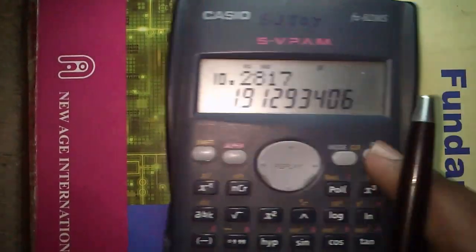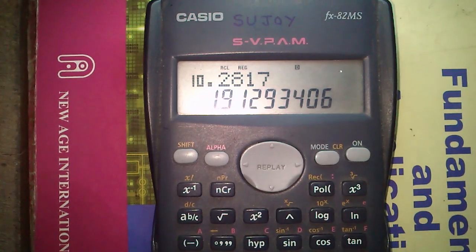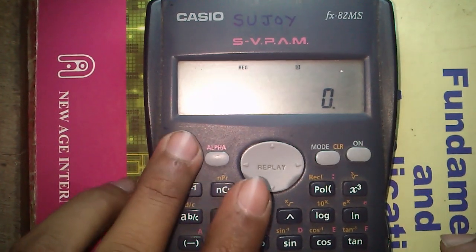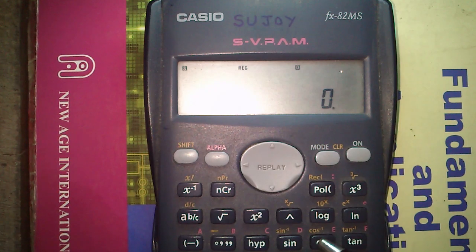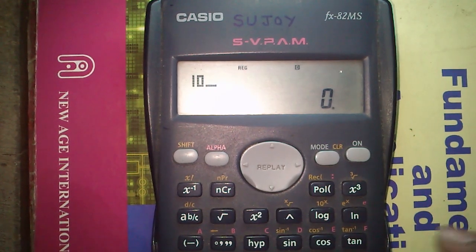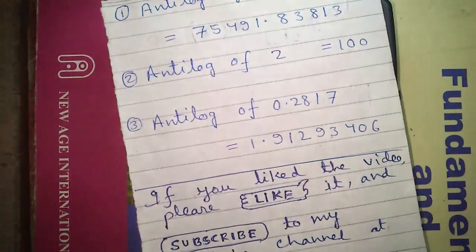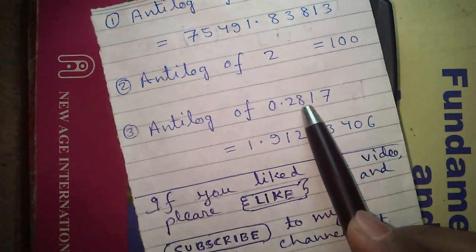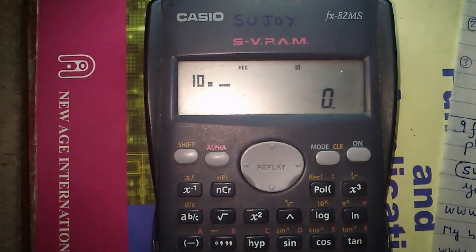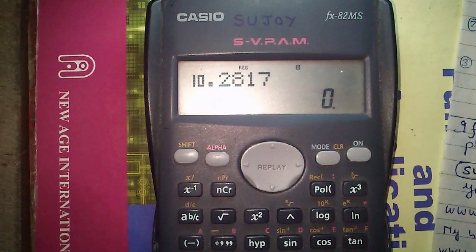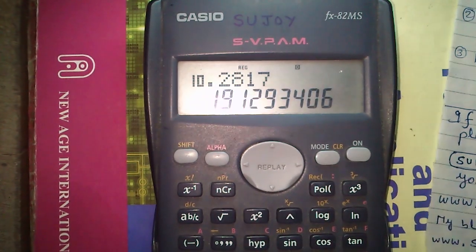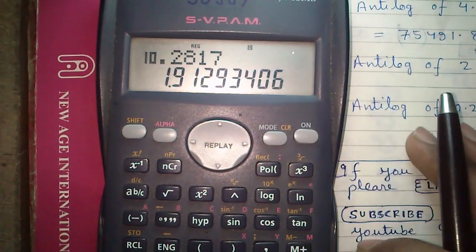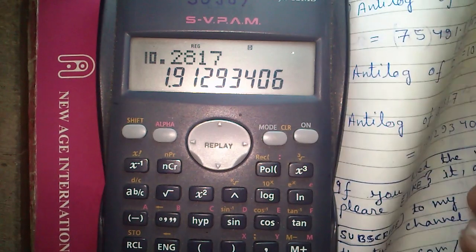To do the same on 822ms calculator, similarly press shift and the log button and enter, say, antilog of 0.2817 and press the equals button. That is 1.912 and so on.